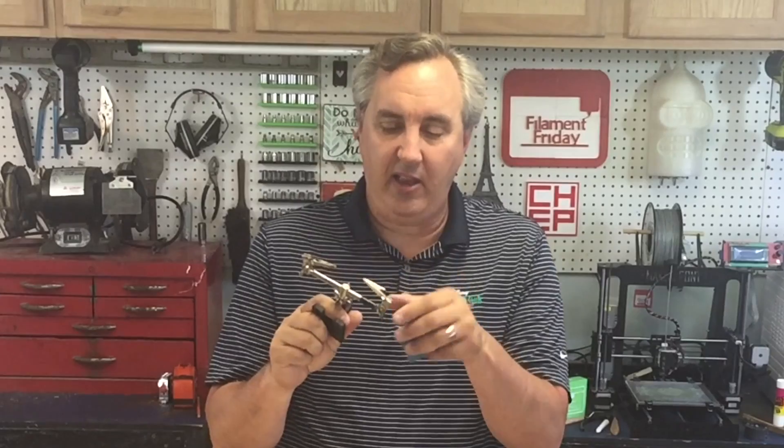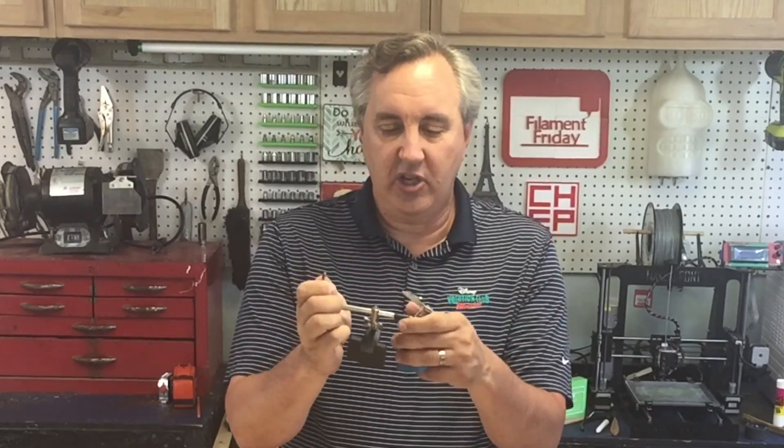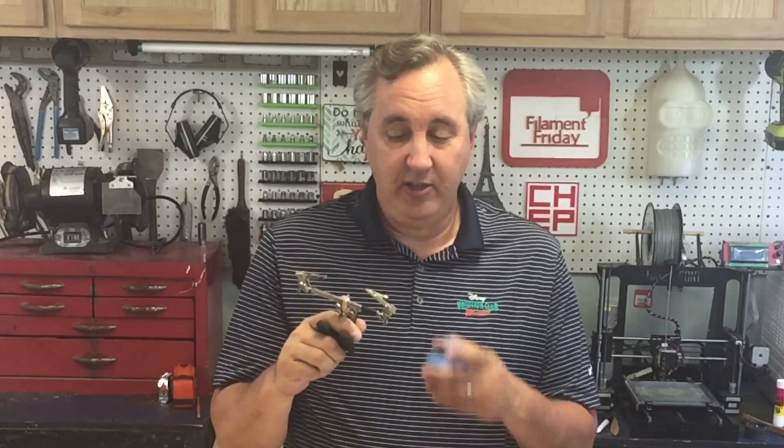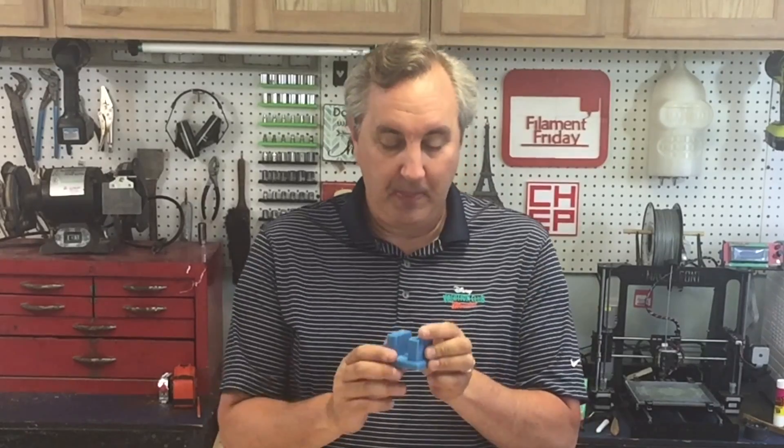Now someone who knows electronics would say just get one of those third hands, which is what this is here. It's got two little alligator clips. And you can adjust the arms however you want. And I've used this for many years. This thing is beat up. I use it to hold circuit boards, to hold wires, and everything else I'm trying to work on. But when you're trying to get two wires to line up like that, the third hand doesn't work as well as this thing. So this was a good print.